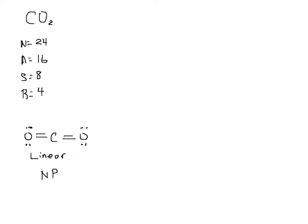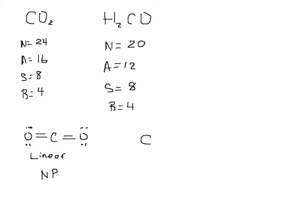Let's look at H₂CO. Needed gives us 20, available would be 12, shared will be 8 — so that's four bonds. Carbon is in the middle; draw your more symmetrical form with oxygen. We know we need a double bond because hydrogen cannot have a double bond. That gives us 8 electrons around carbon, and we put in our two lone pairs.